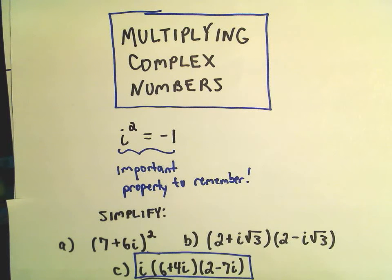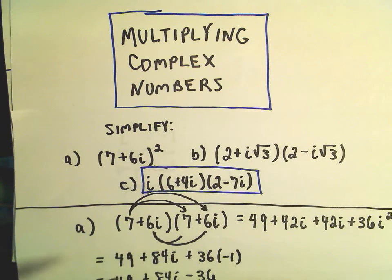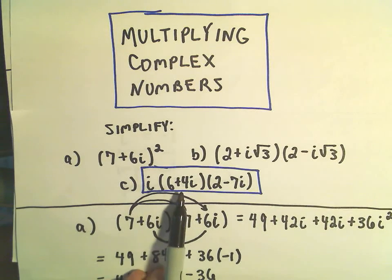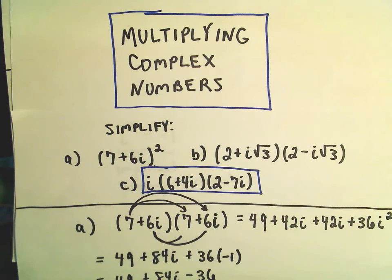Alright, in this video I'm going to do one more example of multiplying complex numbers and I'm going to finish off the example that I didn't finish a second ago, which is to multiply i times the quantity 6 plus 4i by the quantity 2 minus 7i.